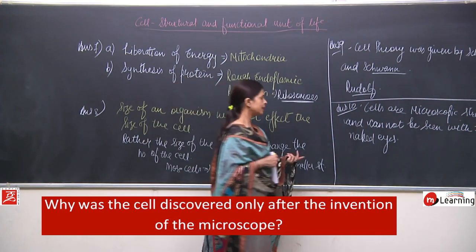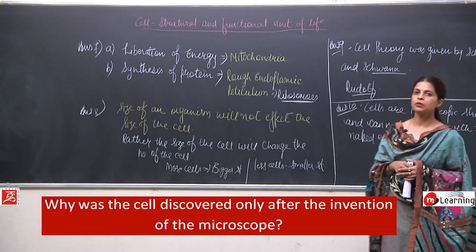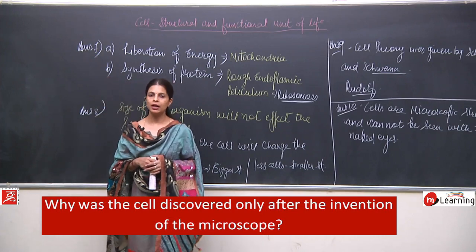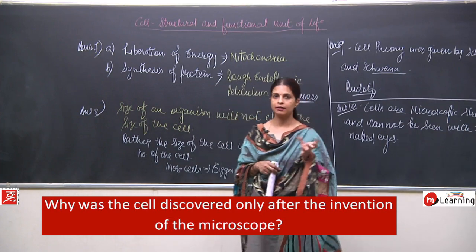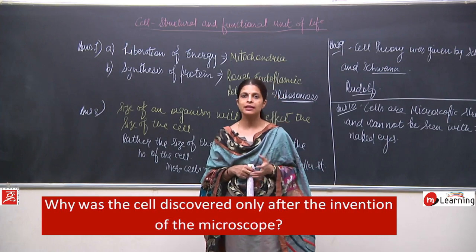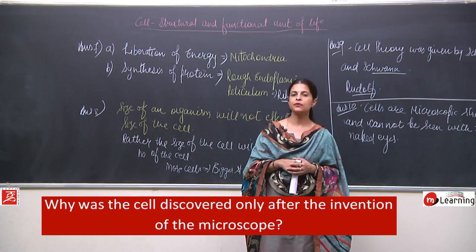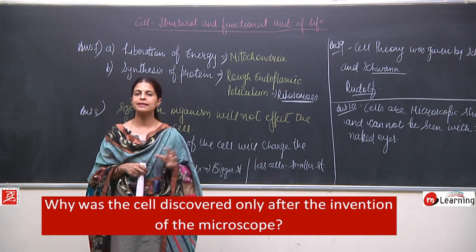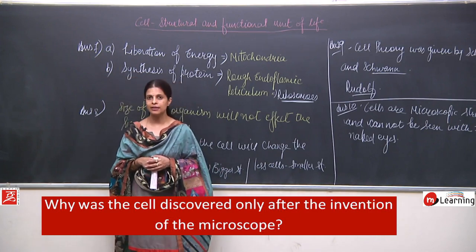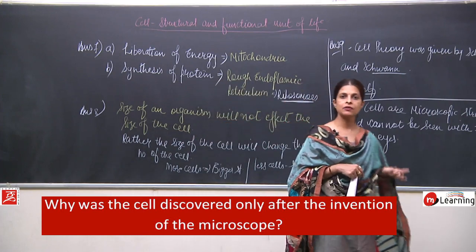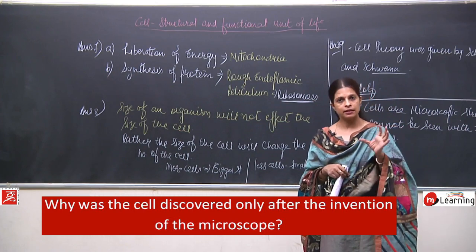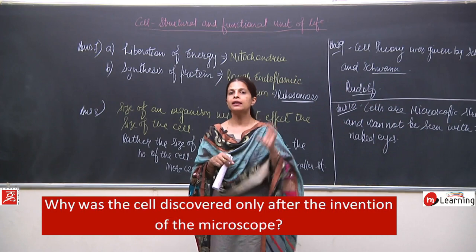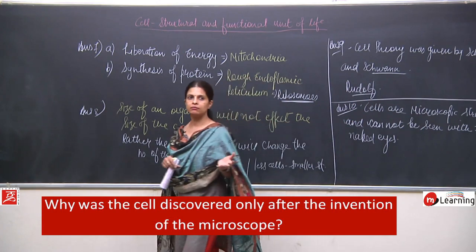When Robert Hooke had his own microscope, it was possible for him to see a slide of a cork — the bark of a plant — which was dead tissue. He was able to observe the cells. In the dead cell, he was the first one who saw the cell — he saw a dead cell. Nothing was found inside; just the walls and compartments were seen because it was a dead cell. It looked like small compartments, and so he named it 'cell'.